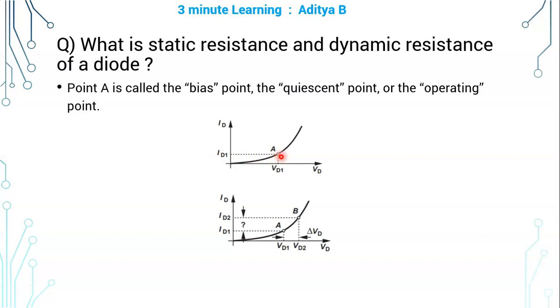The corresponding ID value for that VD value can be found out from the graph. So if you just try to find the slope of this exponential graph, merely the local slope at this bias point A, that is what is called as your static resistance.